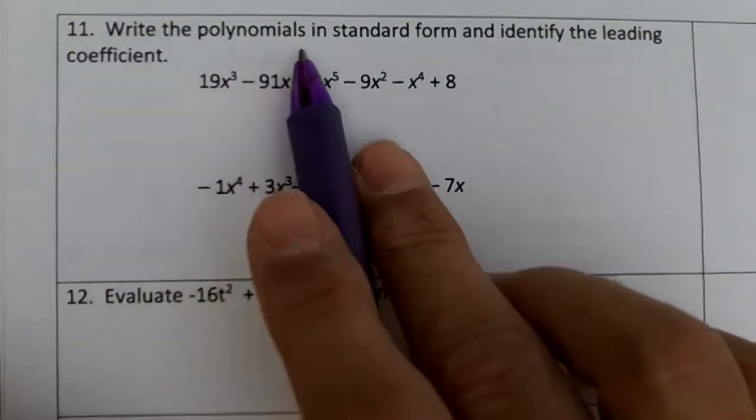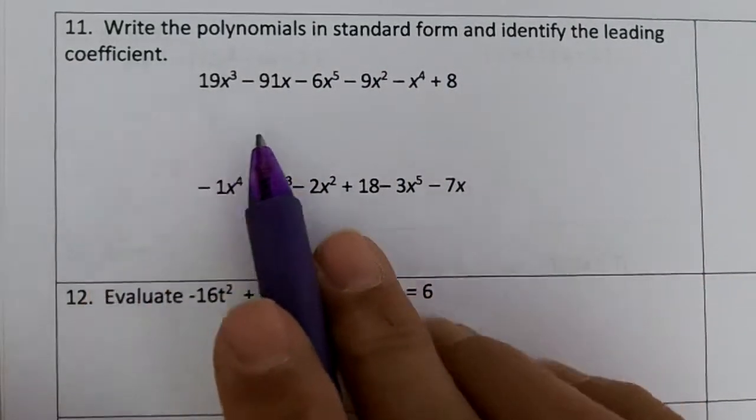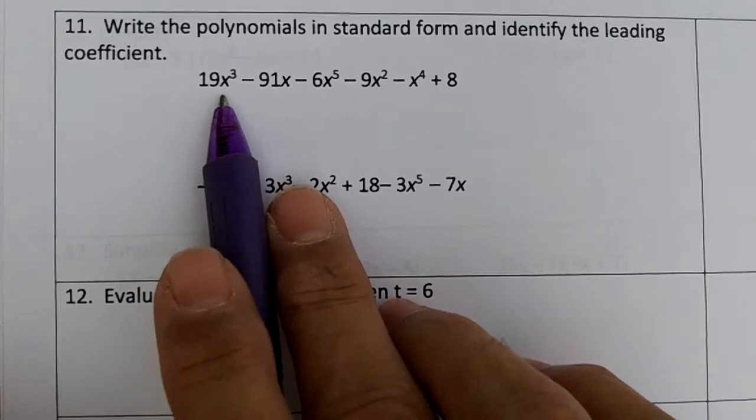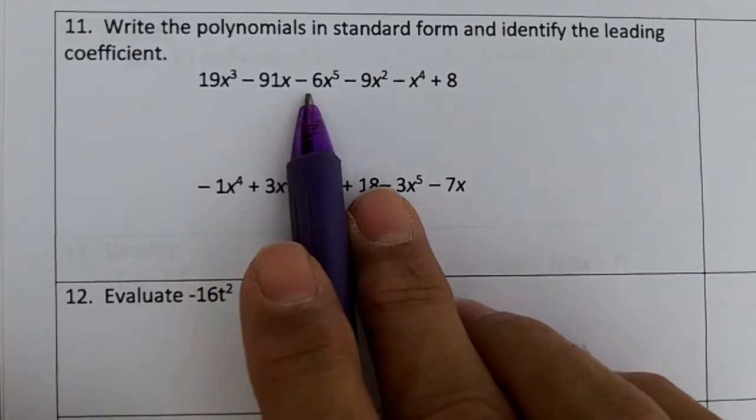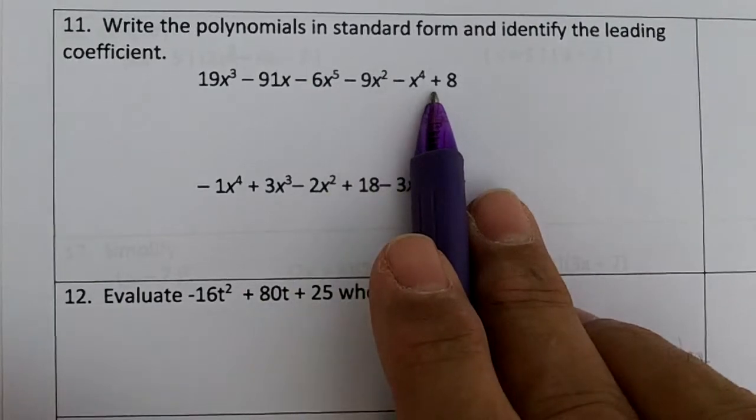Number 11, write the polynomials in standard form and identify the leading coefficient. On this one we have 19x³ - 91x - 6x⁵ - 9x² - x⁴ + 8.